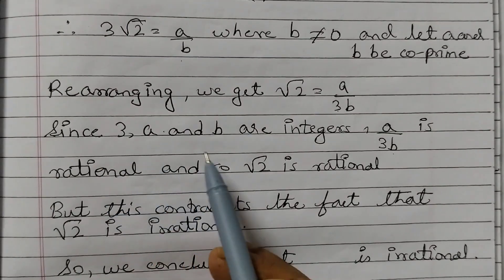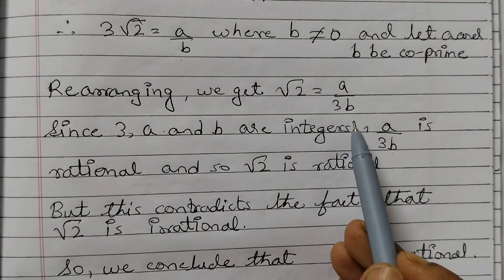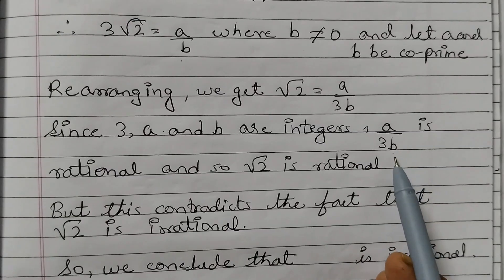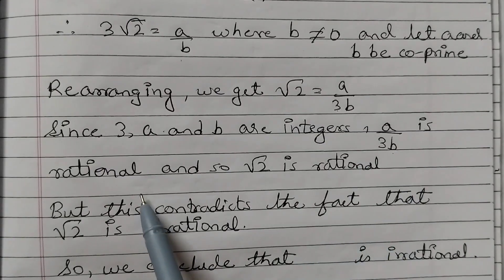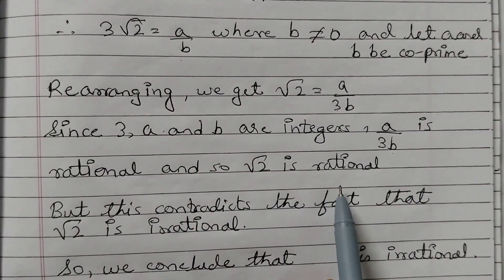Since 3, A and B are integers, A upon 3B is a rational number and so square root of 2 is rational.